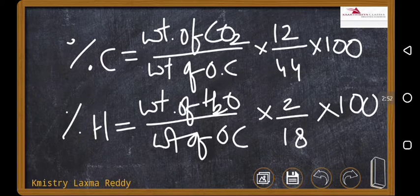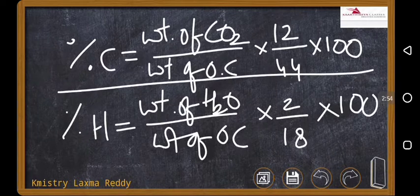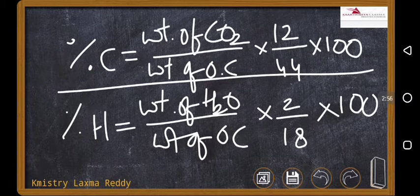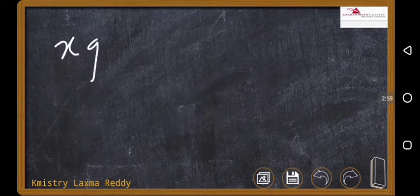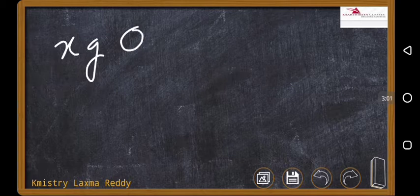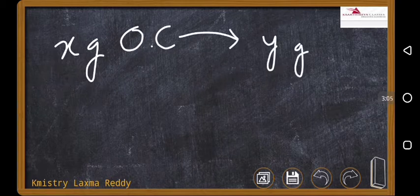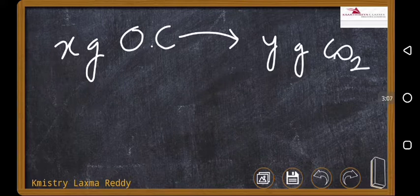Fine. So, how these principles work? I will give you with a simple example, you see. Let's say, x grams of organic compound is there, which is converted to y grams of CO2.